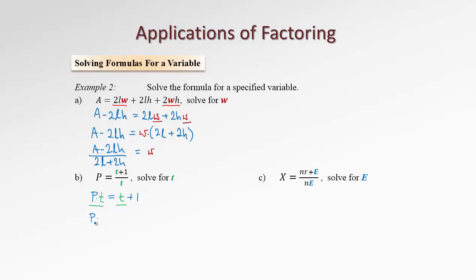We'll get P times T minus another T equals 1. And now let's take T outside of the bracket. So in the bracket we'll have P minus 1 equals 1.